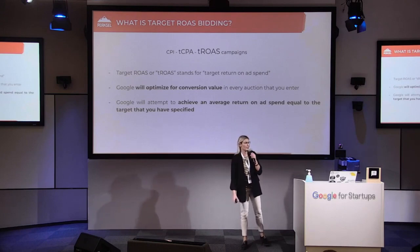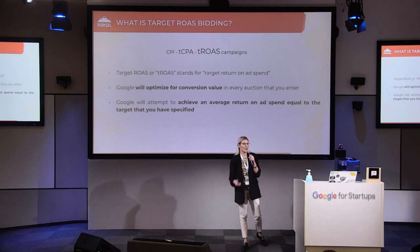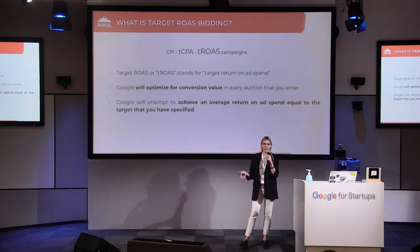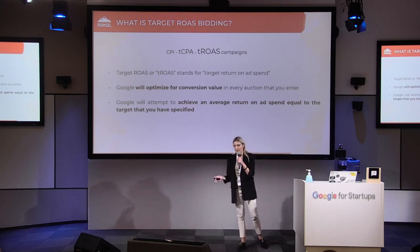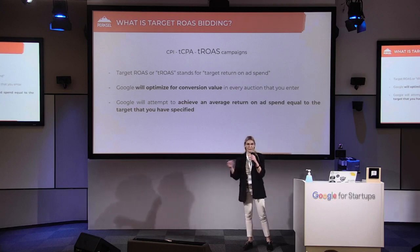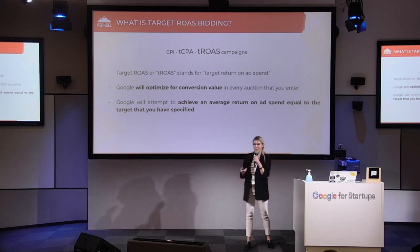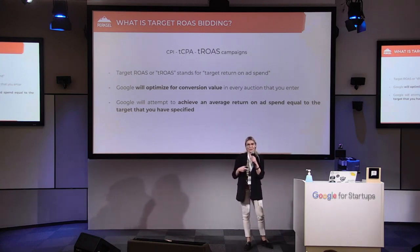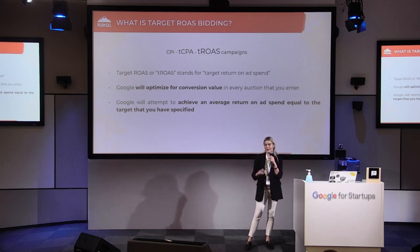What is TROAS bidding? As Mariusz already said, it is a target return on ad spend. It's an automated bid strategy that uses auction-time bidding, which basically means that Google will optimize for conversion value in every auction that you enter. After that, Google will set maximum cost-per-click bids in order to achieve an average return on ad spend that you have specified. So if you want to move your campaigns to the next level and focus solely on positive return on investment, you may want to consider this bidding strategy.